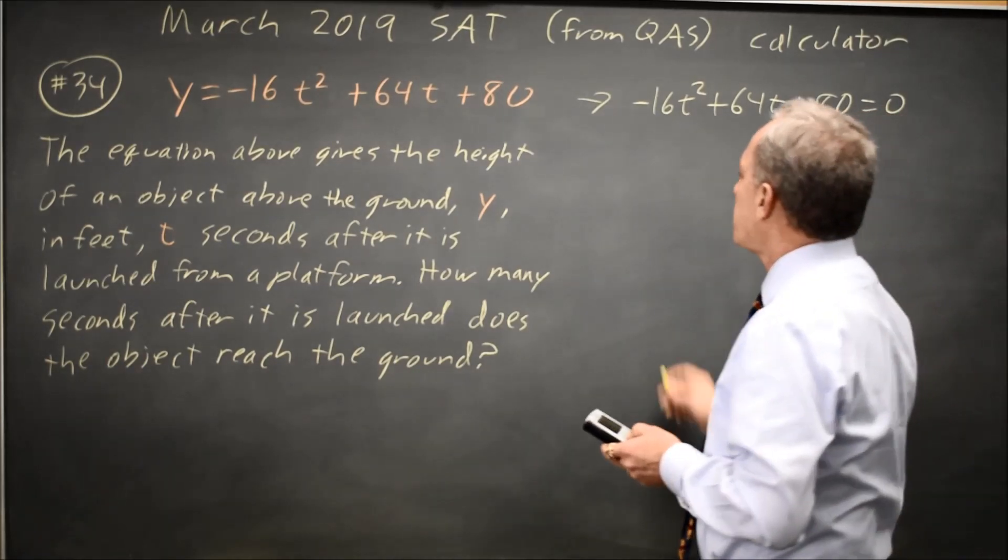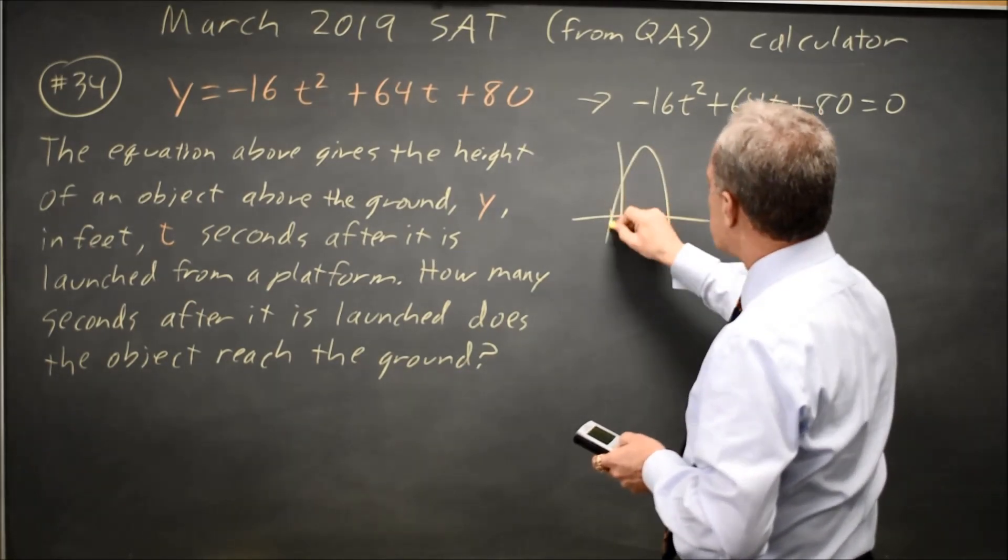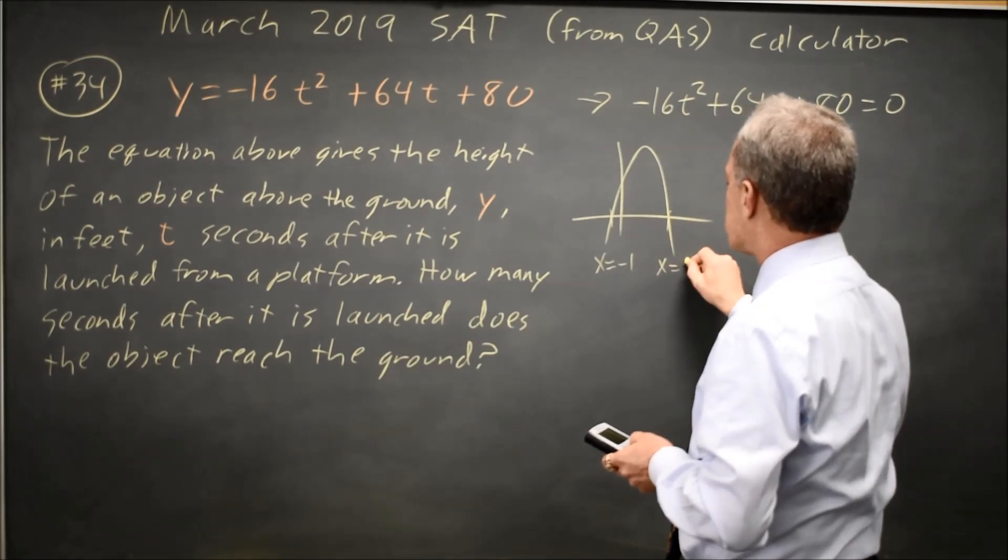Try the standard window, and I get a graph that looks something like this, where this is x equals negative 1, and this is x equals positive 5.